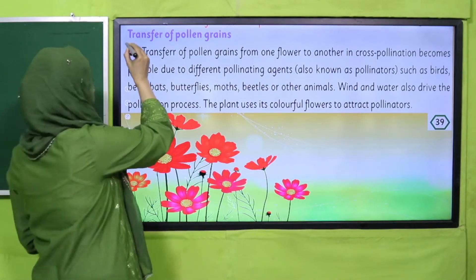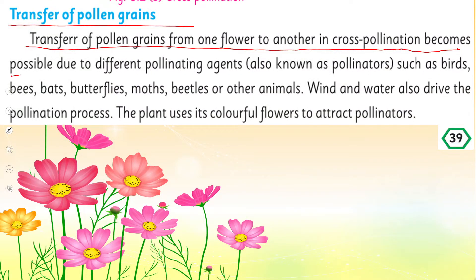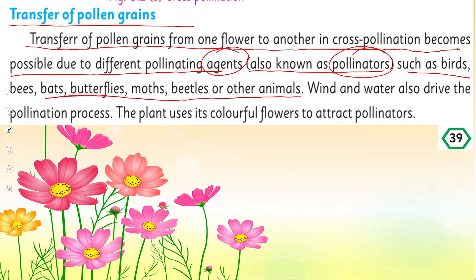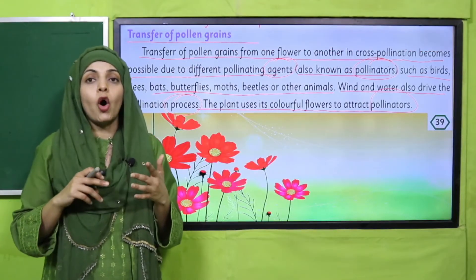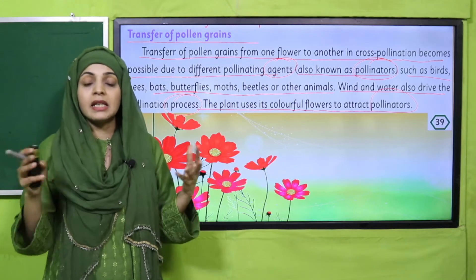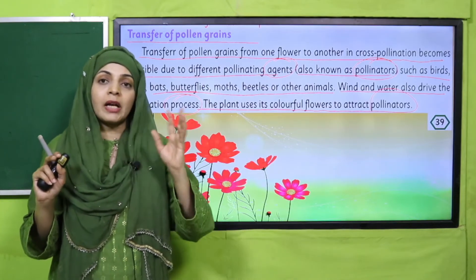Transfer of pollen grains in cross-pollination, given on page 39, becomes possible due to different pollinating agents, also known as pollinators, such as birds, bees, bats, butterflies, moths, beetles, or other animals. Wind and water also drive the pollination process. The plant uses its colorful flowers to attract pollinators. The colorful petals attract different insects so that pollination occurs.